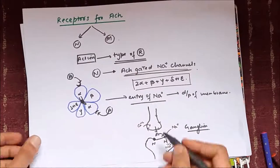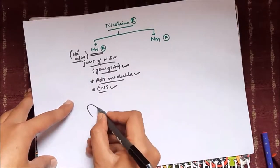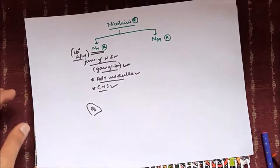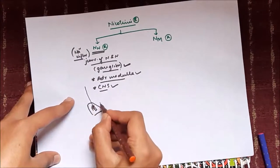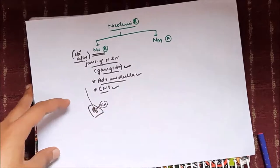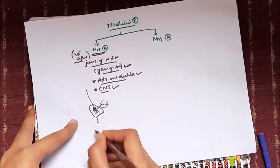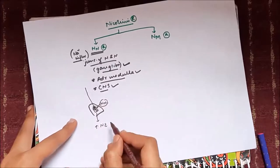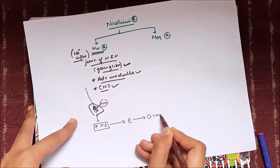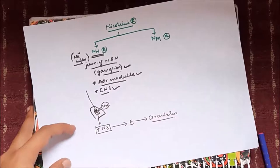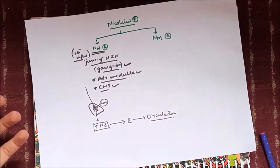At the ganglion, their function is to carry the action potential from one neuron to another. In the adrenal medulla, the preganglionic fiber releases acetylcholine onto NN receptors, which stimulates increased synthesis of norepinephrine. This norepinephrine is eventually converted into epinephrine, which is released into the circulation.